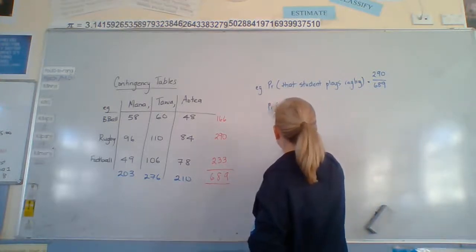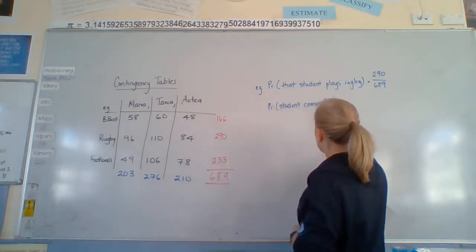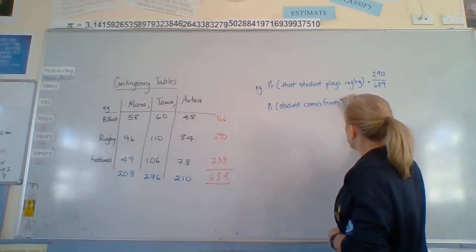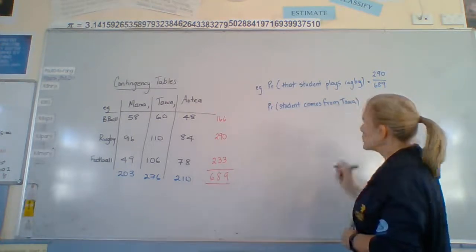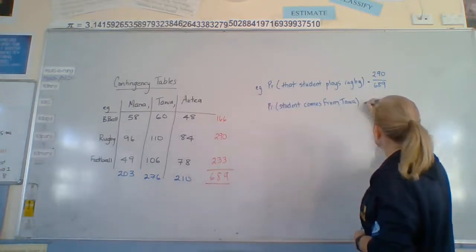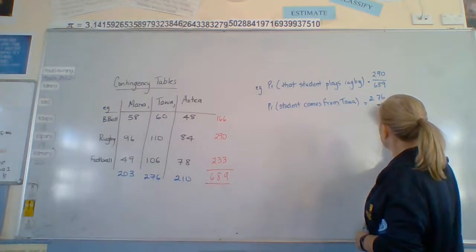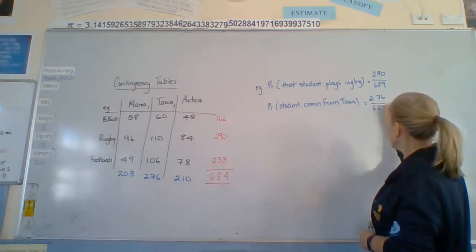What is the probability that a student picked at random comes from Tawa? Okay, so we're not interested in the sport this time. Just who comes from Tawa. So we have 276 out of 689.